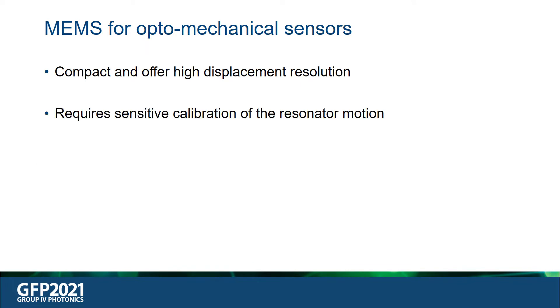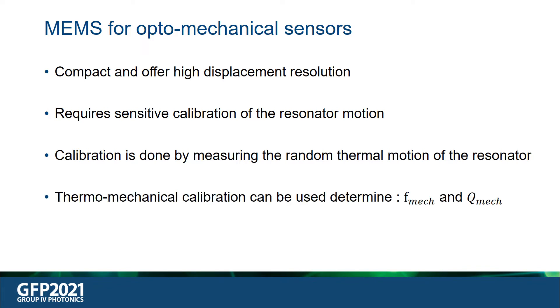But these sensors require sensitive calibration of the mechanical resonator's motion. This is often done by measuring the random thermal motion or the Brownian motion of the resonator. This procedure is also known as thermomechanical calibration. It invokes the equipartition theorem that relates the energy of the thermal motion of the resonator to its mechanical displacement. Also, by measuring the thermal noise, key figures of merit of the mechanical resonator can be determined in-plane, such as the resonance frequency and the mechanical quality factor.